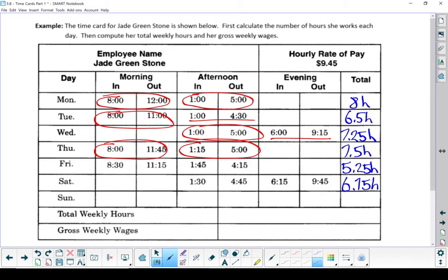Jade didn't work at all on Sunday. To figure out what her total weekly hours are, we're going to take all of these numbers and add them together. Altogether, that adds up to 41.25 hours. Now, it sounds like that's probably overtime because it's over 40 hours. We're not going to worry about that on this question. To figure out what Jade's gross weekly wages are, we're going to take the number of hours and times it by her hourly rate of pay. 41.25 hours times $9.45 an hour gives me a total wages of $389.81. There is Jade's gross weekly wages for that week.